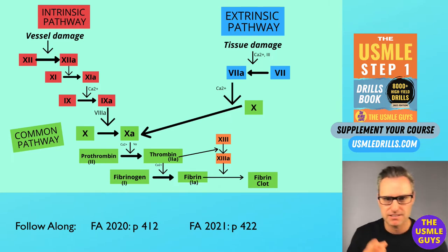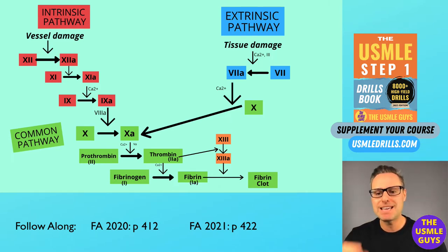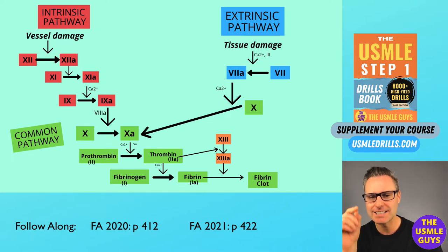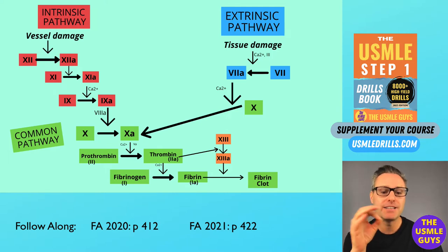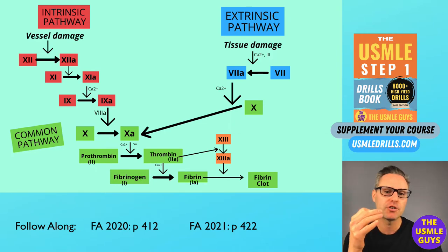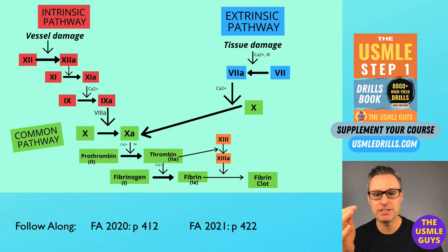Hemophilia A, B, and C — these are all inherited in what manner? X-linked recessive. But they do have different factor deficiencies. Hemophilia A is caused by a factor 8 deficiency. Hemophilia B is due to factor 9. And hemophilia C is caused by factor 11.